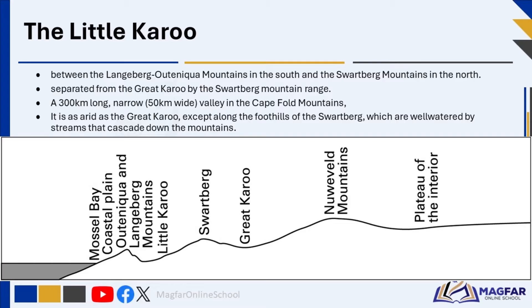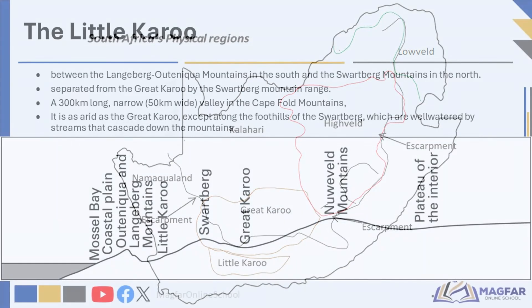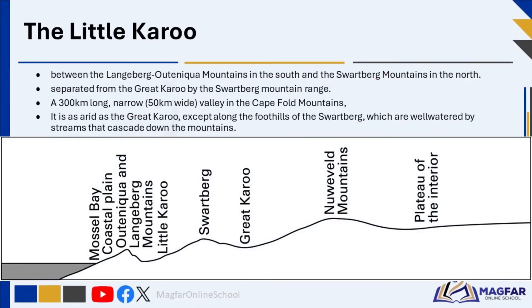The Little Karoo is a region in the western Cape province of South Africa. It is also known as the Klein Karoo or the Southern Karoo. The Little Karoo is located between the Langeburg Mountains and the Outeniqua Mountains in the south and the Swartberg Mountains in the north, separated from the Great Karoo by the Swartberg Mountain Range. It lies in a 300 km long and 50 km wide valley in the Cape Fold Mountains.